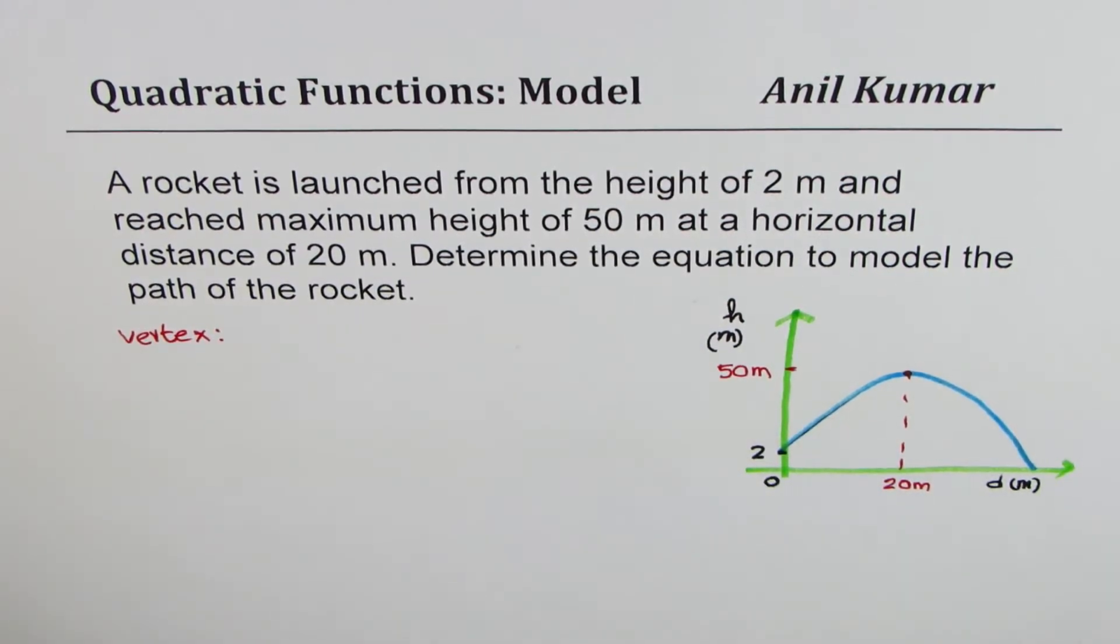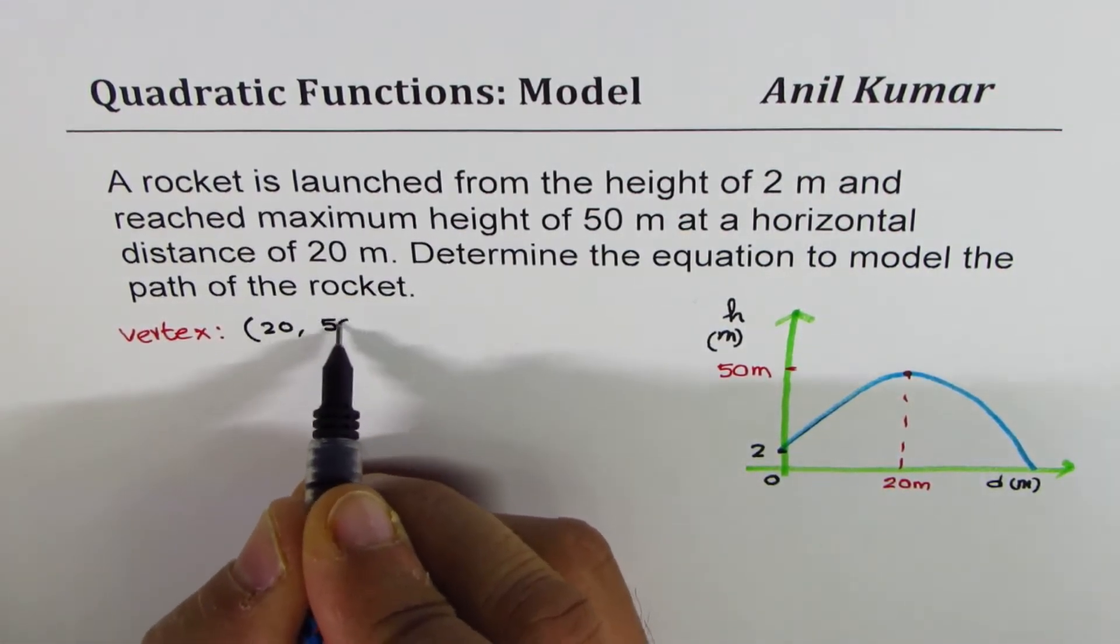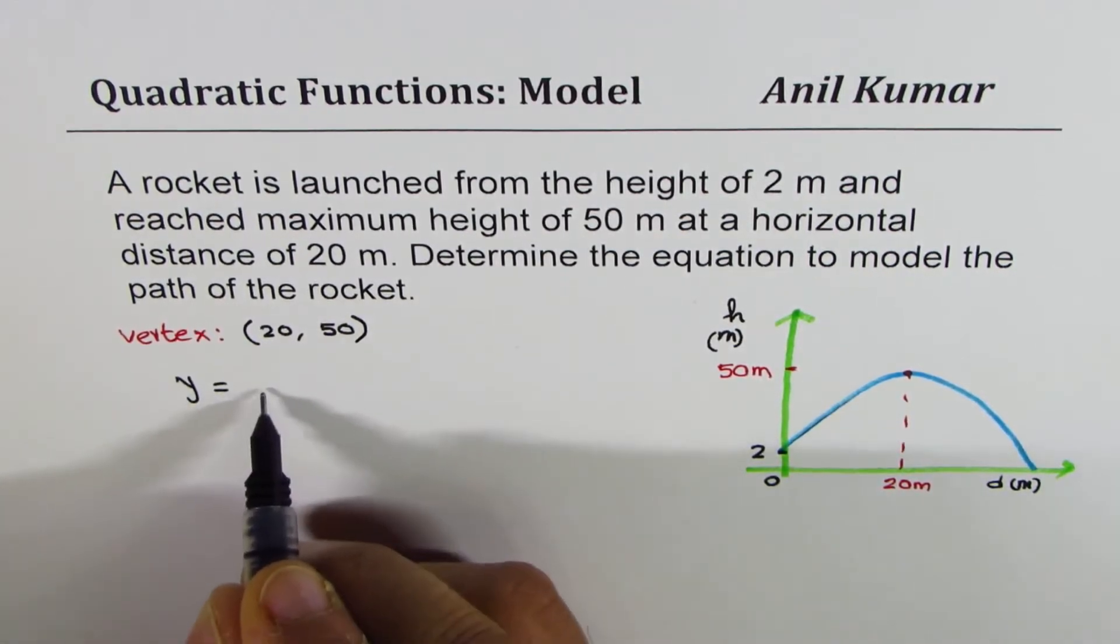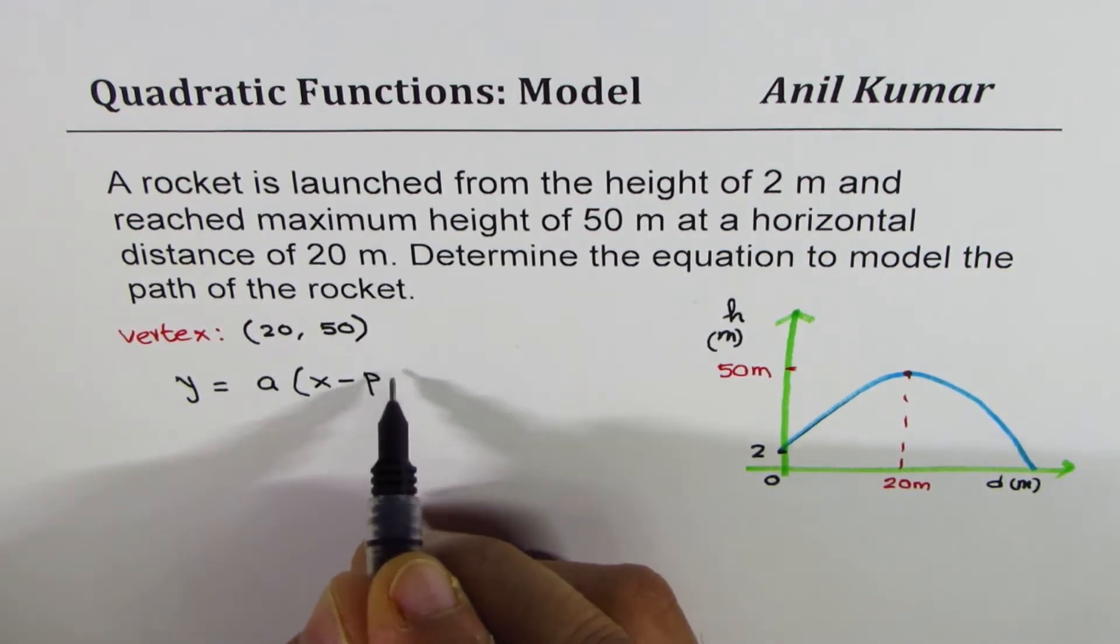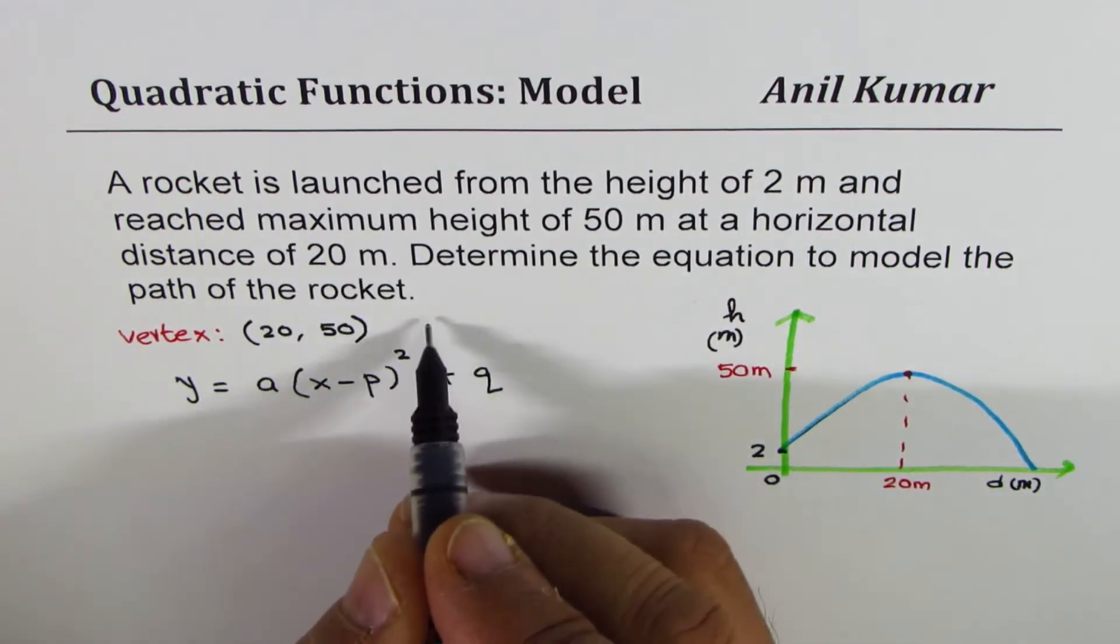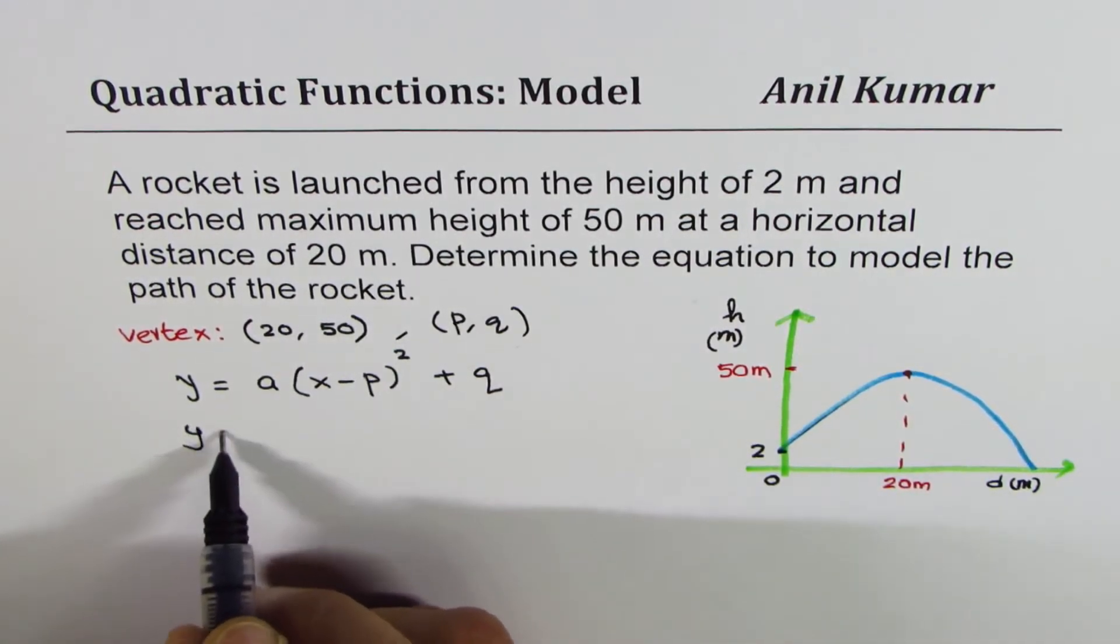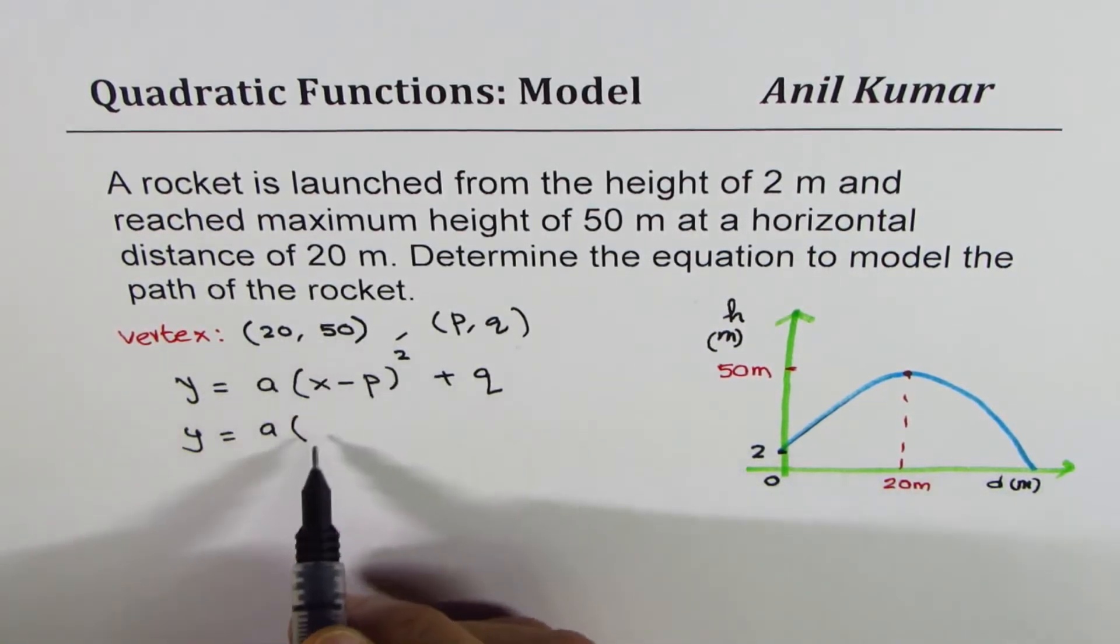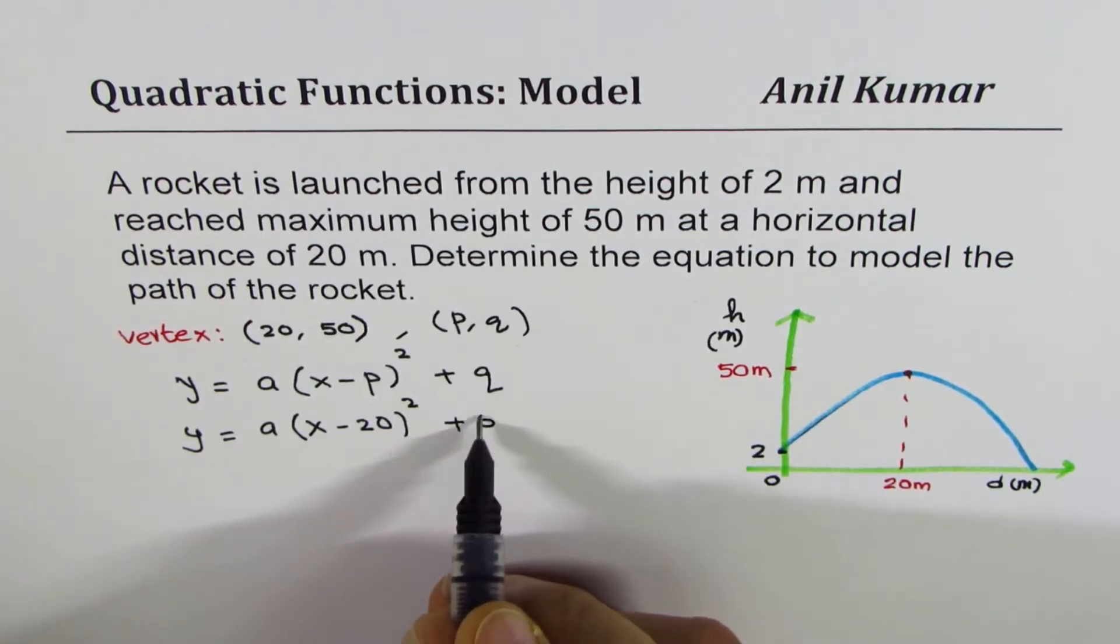Now vertex in this particular case is at (20, 50). So the equation which is generally written as y equals to a times (x minus p) whole square plus q where the vertex is (p, q) can now be written as y equals to a times (x minus 20) whole square plus 50.